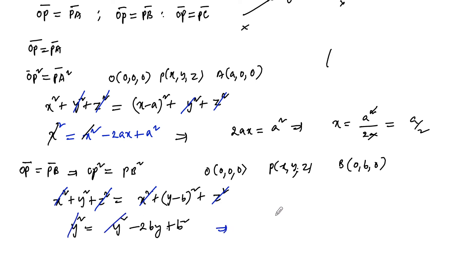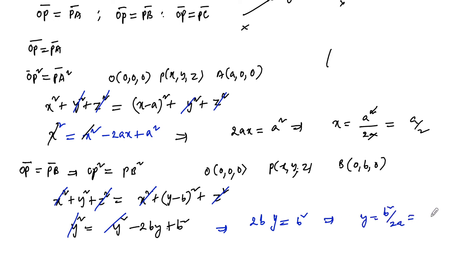Upon cancellation of y² on both sides, we get −2by = b², wait, 2by = b², which implies y = b²/2b, that is y = b/2. So we are getting y = b/2.